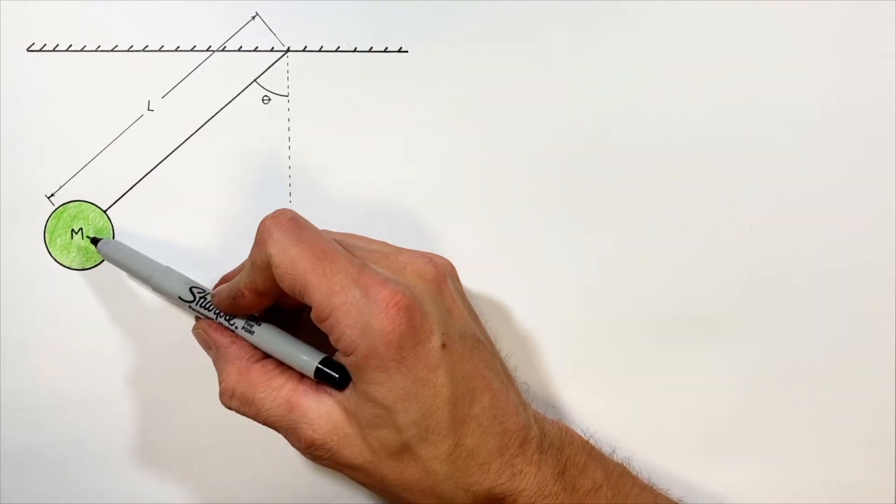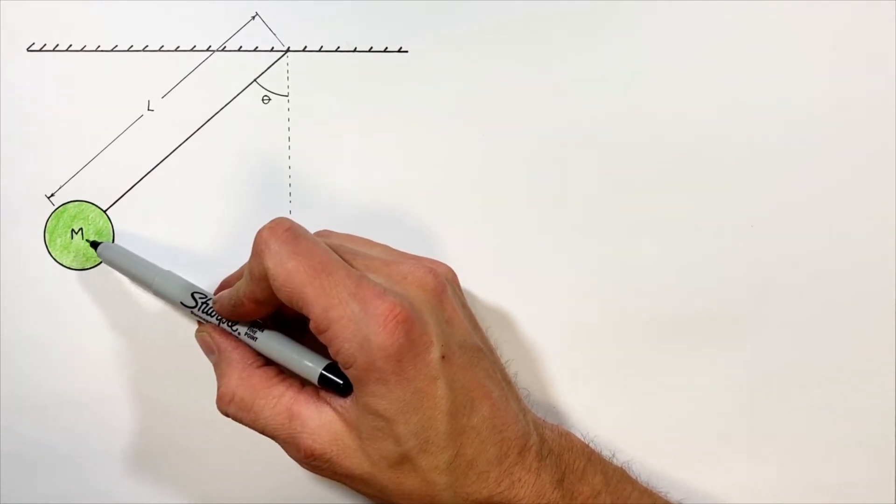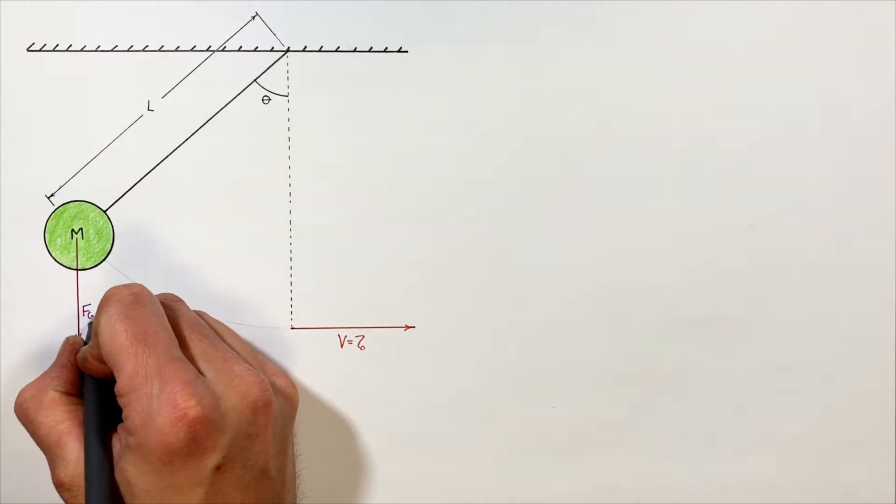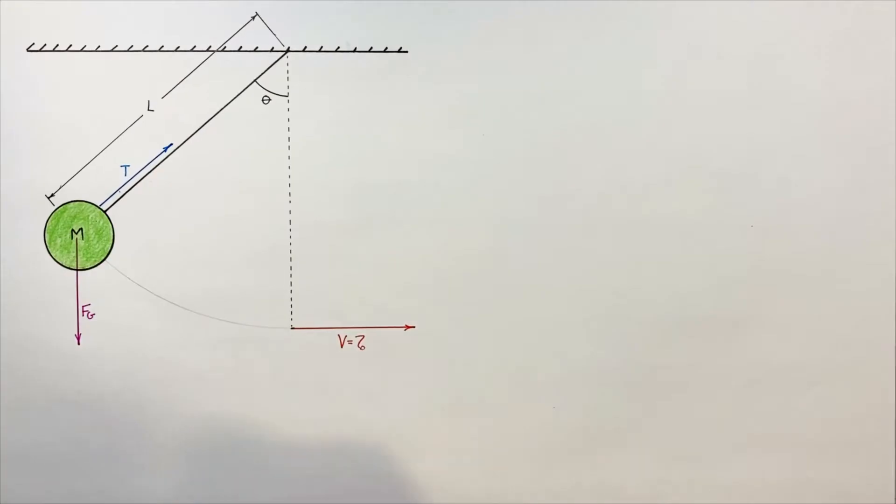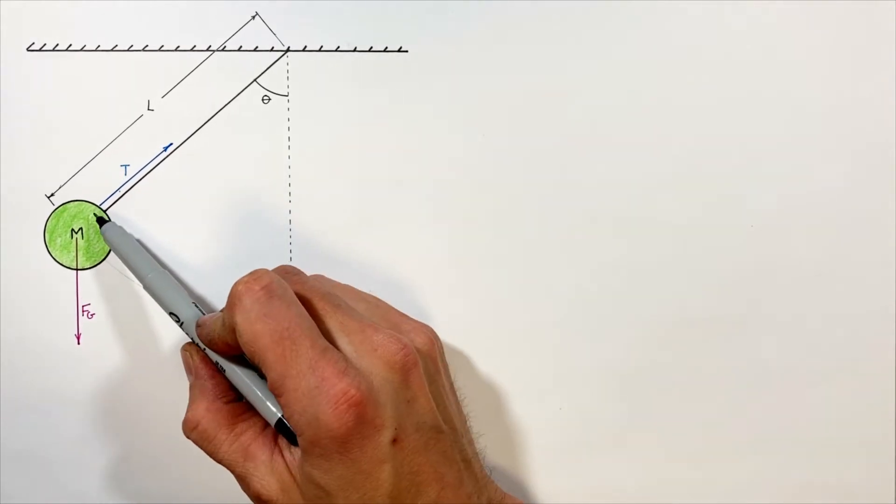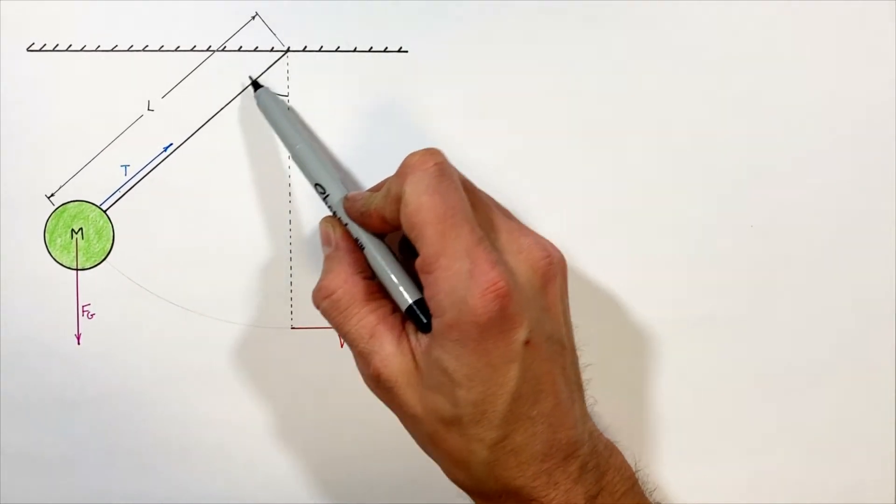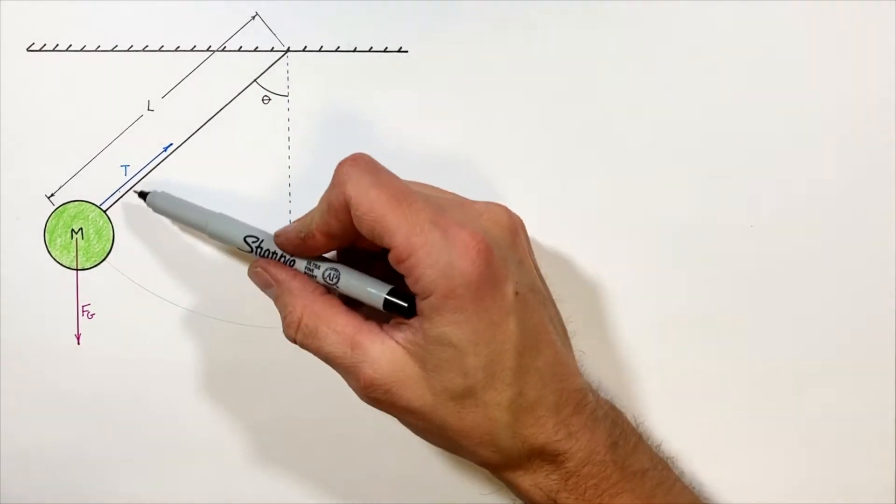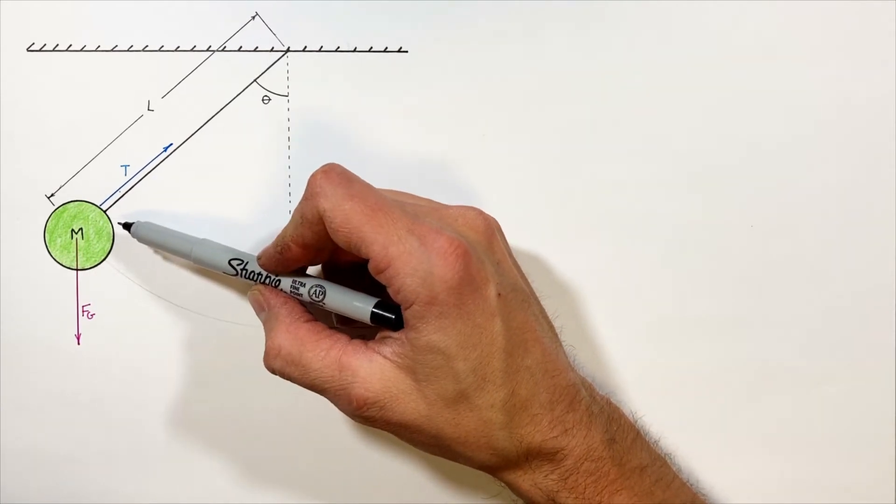The first thing we're going to do is take a look at the forces which are acting on this mass. Downward we've got the force by gravity acting on the mass, and the tension is acting along the string which connects to the ceiling.